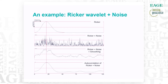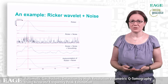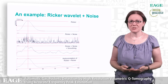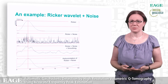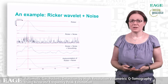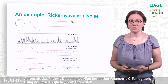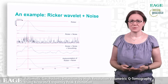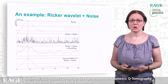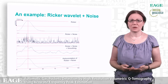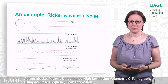When we compute the amplitude spectra of the wavelets shown — the original Ricker reference on top, the noisy Ricker in the middle, and the autocorrelation on the bottom — we compute the amplitude spectrum of the autocorrelation only around the maximum peak.